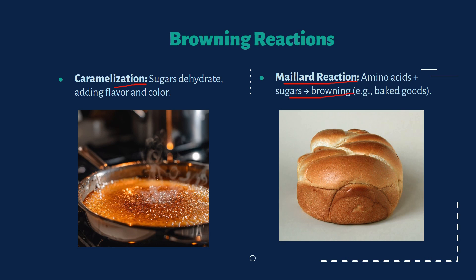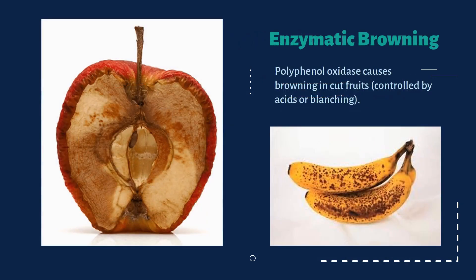Here the sugars are turning brown — caramelization is mainly used for bakery products. Another browning reaction in carbohydrates is enzymatic browning, caused by polyphenol oxidase. It turns apples, potatoes and bananas brown when they are exposed to air. It can be controlled by acids or blanching processes.